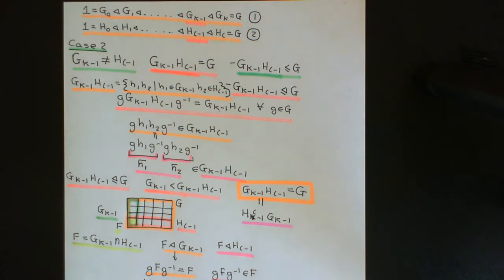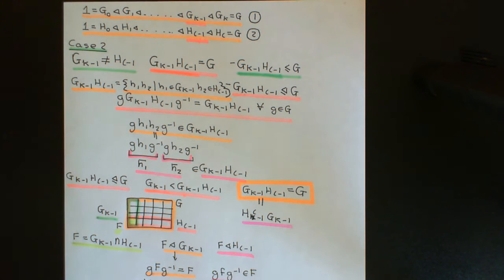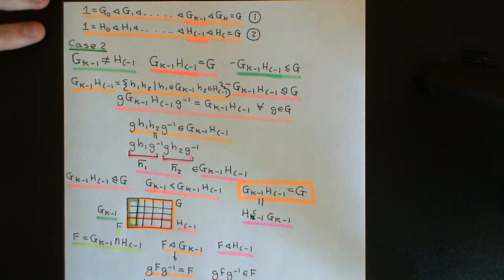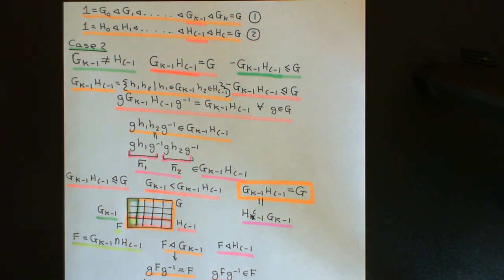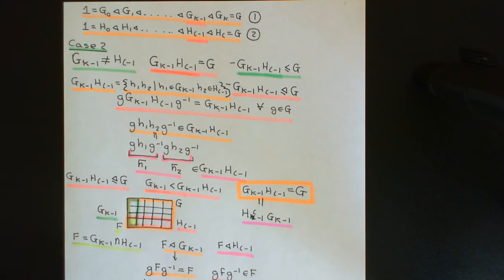Welcome to this next video in which we are discussing composition series and the Jordan-Hölder theorem. What we want to prove is that these two composition series for group G actually do obey part two of the Jordan-Hölder theorem, i.e. that their lengths are the same and that their composition factors correspond.